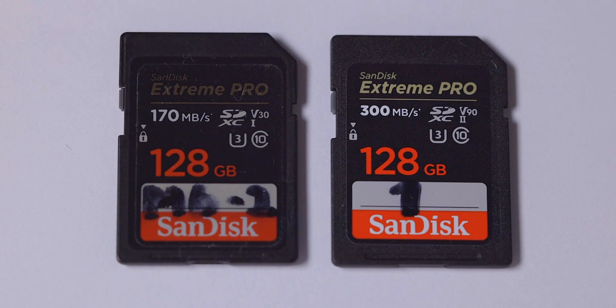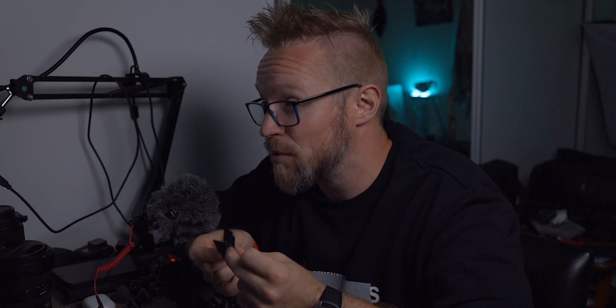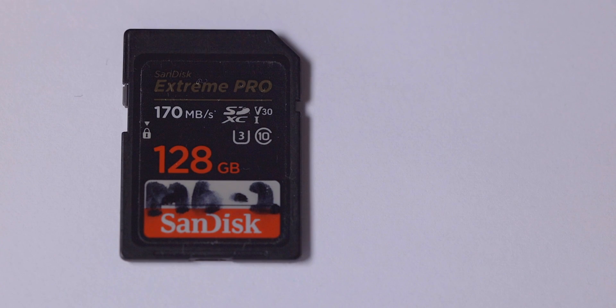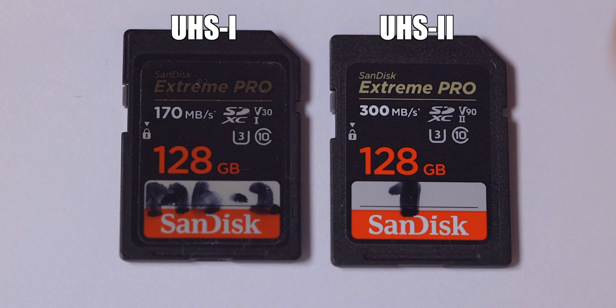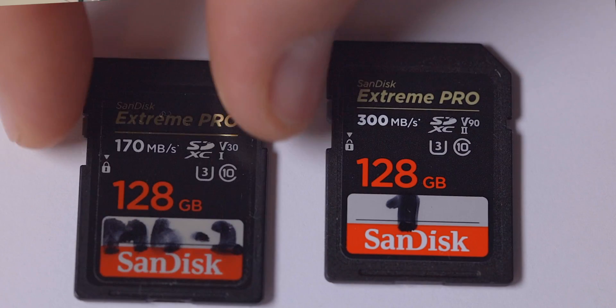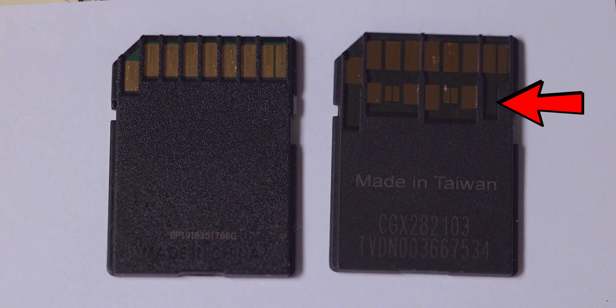I only use SanDisk Extreme Pro memory cards — I find these very reliable and I've never had any issues with them. This is a UHS-I memory card and this is a UHS-II memory card. UHS stands for Ultra High Speed. The easiest way to tell the difference between UHS-I and UHS-II is to turn the card around. There is a second row of pins on the UHS-II card.